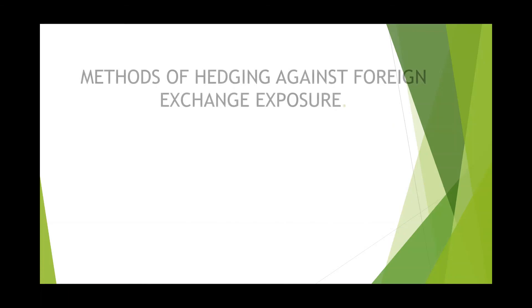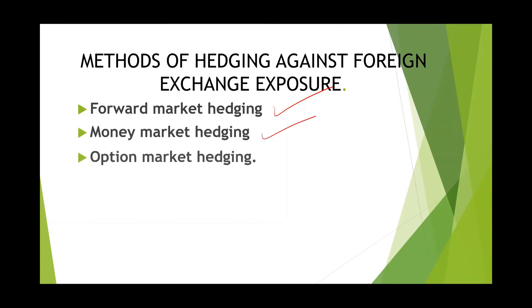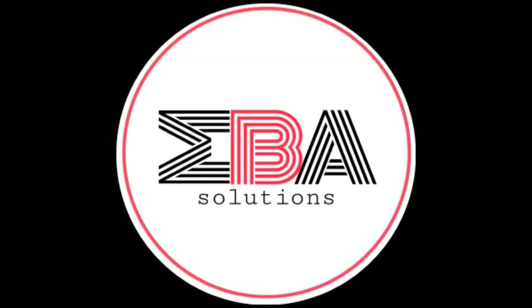To reduce the risk of foreign exchange exposure, we use hedging. There are three different methods of hedging against foreign exchange exposure: the first is forward market hedging, the second is money market hedging, and the last is option market hedging. We will continue with these three methods in our next video. Thank you for watching.